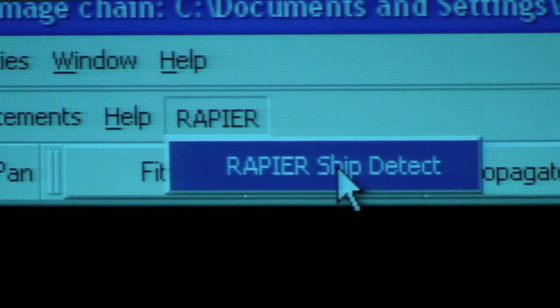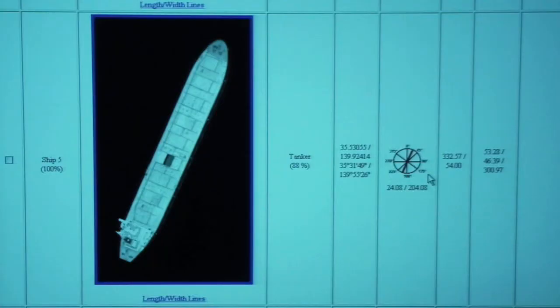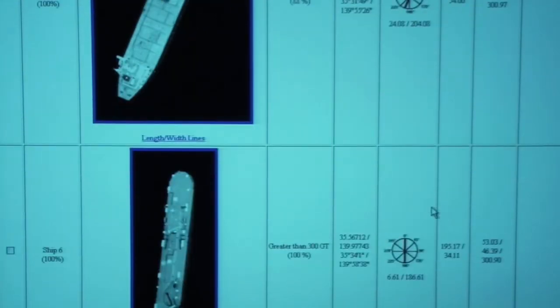We've developed the Rapier Ship Detection System, which is just one plug-in to the Rapier framework. The system takes a satellite image of a port or open ocean area and looks for ships or objects on the ocean surface to detect and report those objects in a fashion that the analyst wants to see.